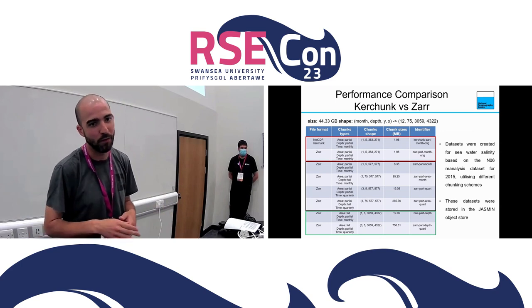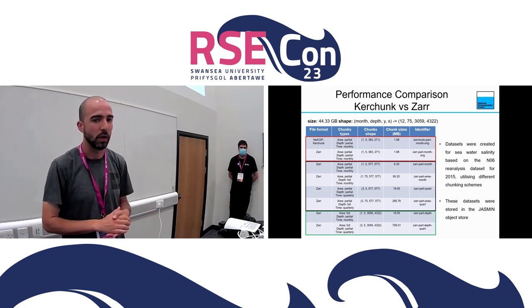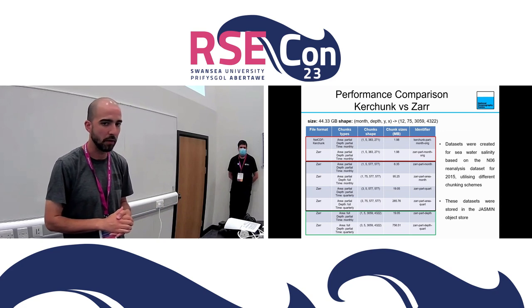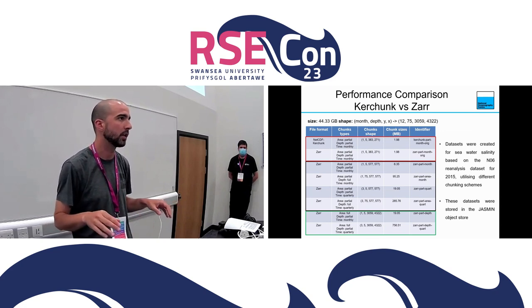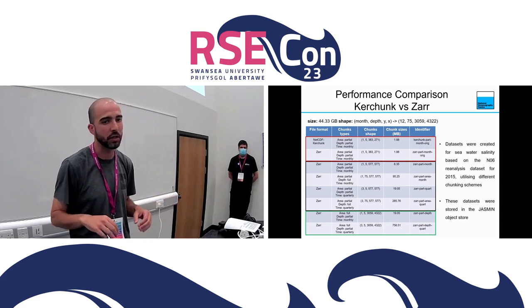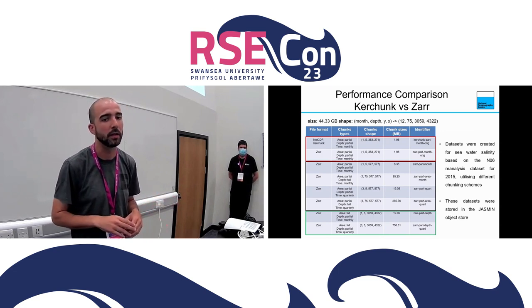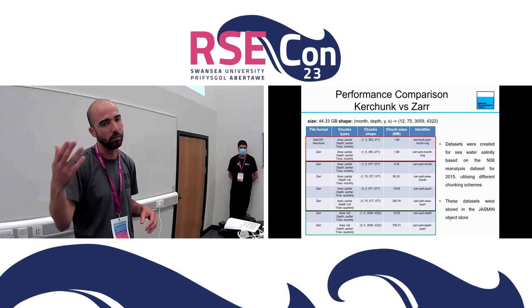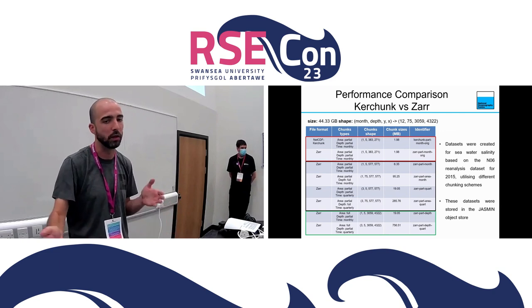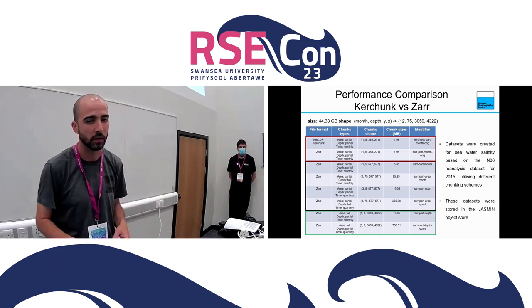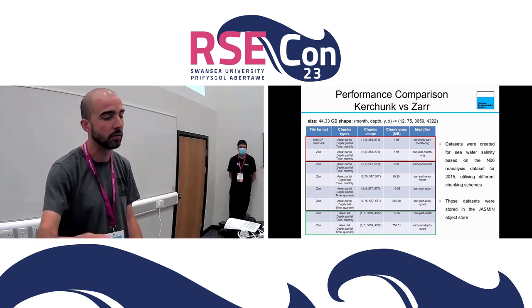In the green box, we have datasets also in Zarr format, where we did not chunk the Y and X dimensions — we kept that dimension with the same granularity — and time was chunked either monthly or quarterly. We stored these datasets in the Jasmine object store and then performed different operations to assess performance.